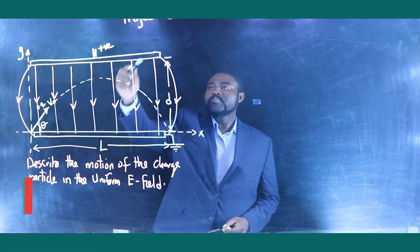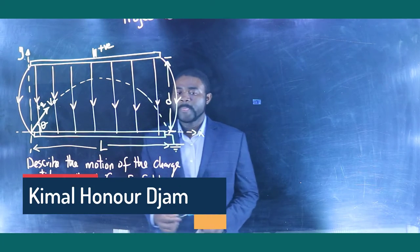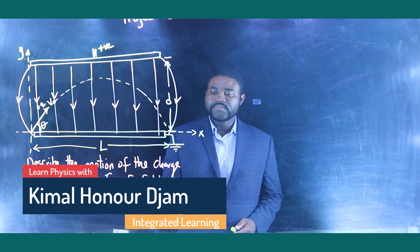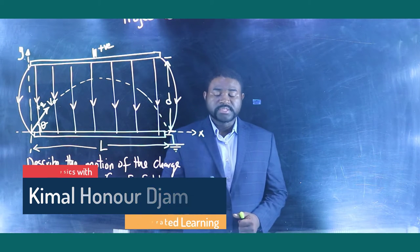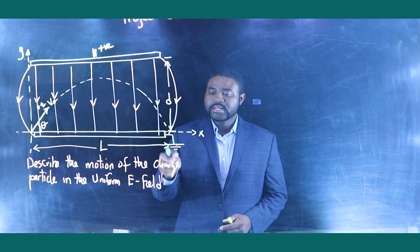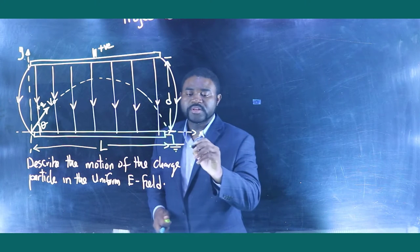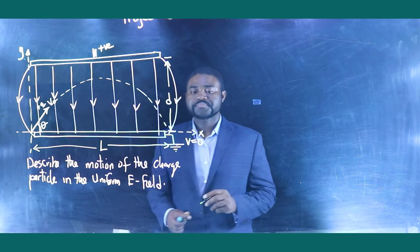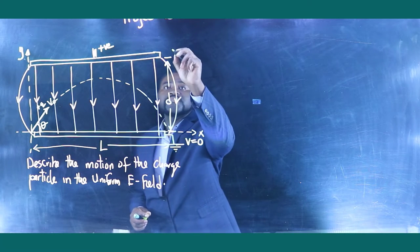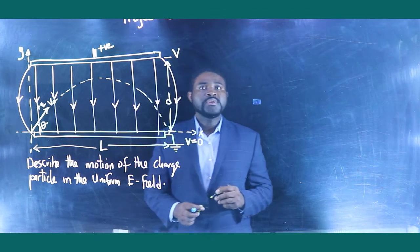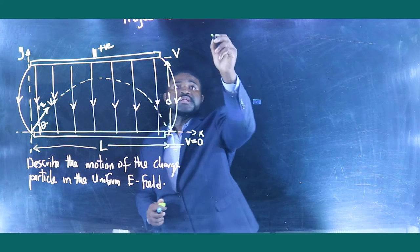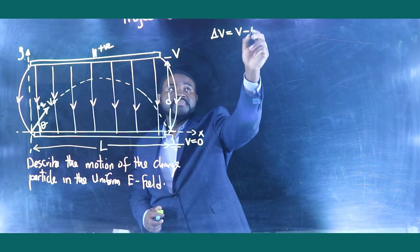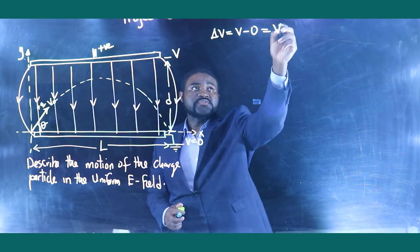We have a positively charged plate and a negatively charged plate that is grounded. The fact that it's grounded implies that the potential of this plate is zero. The potential of the positive plate is V. This would mean that the potential difference delta V is equal to V minus zero, which is just V.